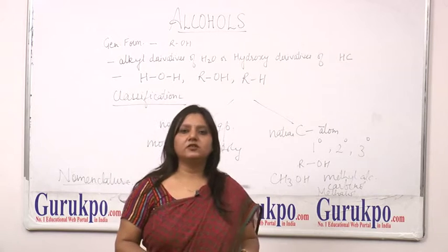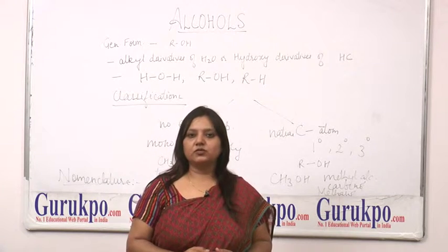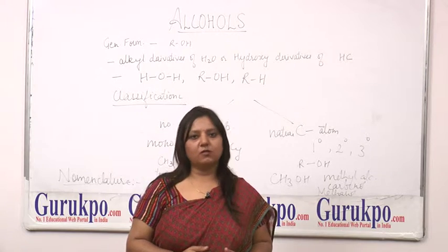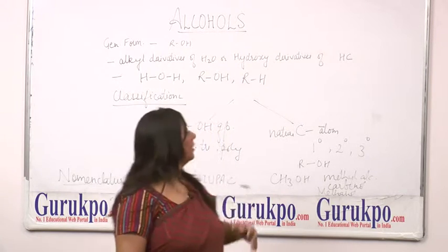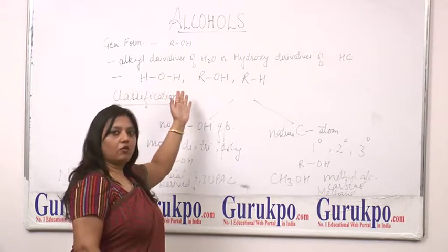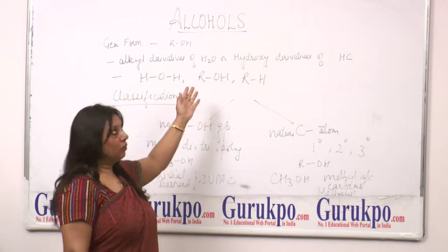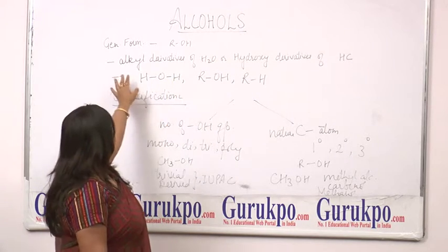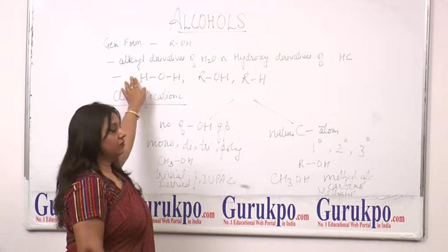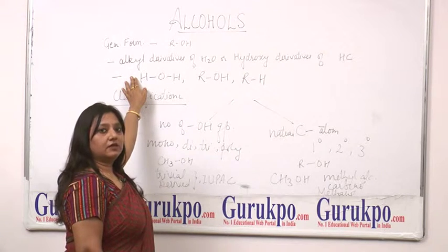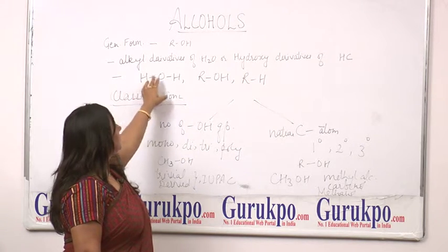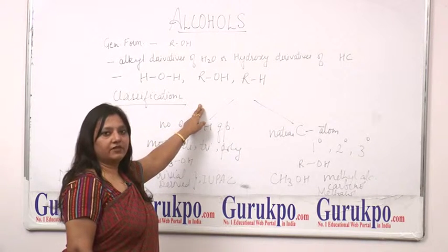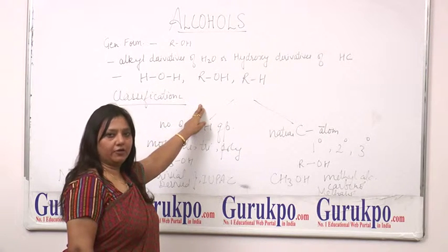Alcohols is a common term used in society, but today I will discuss about its classification and its general formula. The general formula of alcohols is ROH, where R stands for an alkyl group. These compounds are considered to be derived from the alkyl derivatives of water, or the hydroxy derivatives of hydrocarbons.